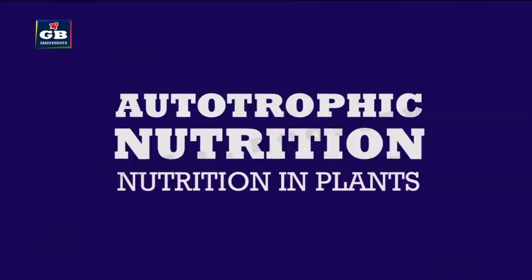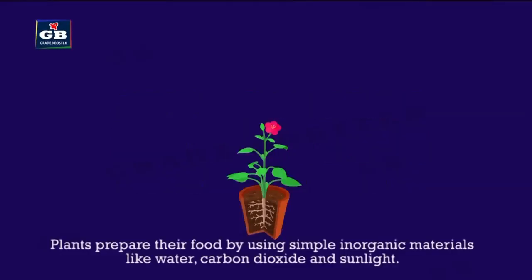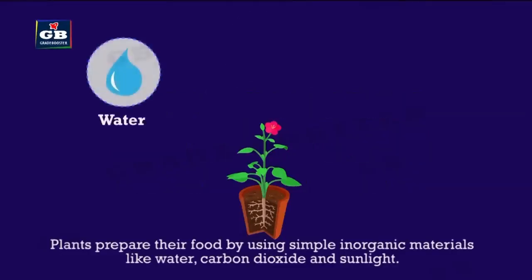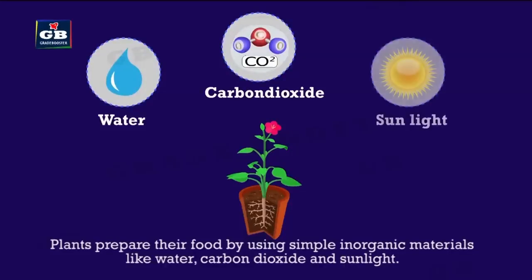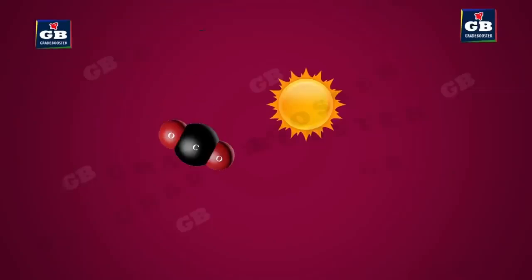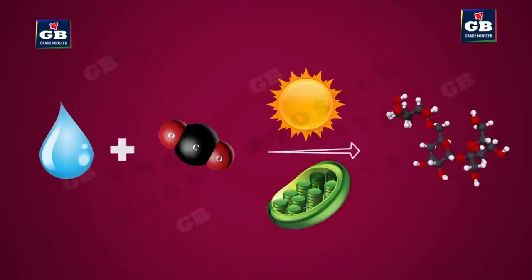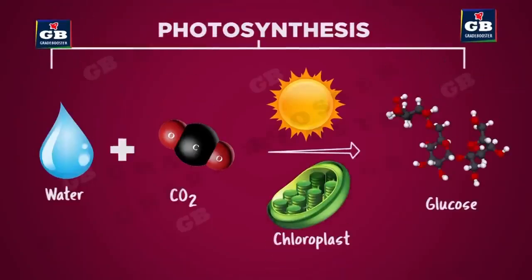Nutrition in plants. Plants prepare their own food by using simple inorganic materials like water, carbon dioxide, and sunlight. This process is called photosynthesis. Photo means light and synthesis means making or preparation.